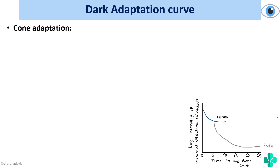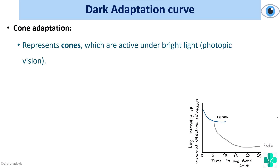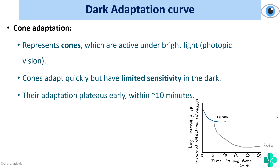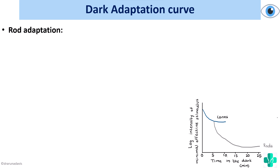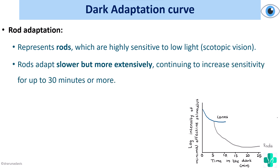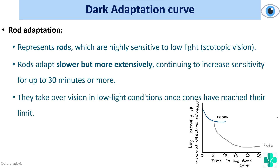In the dark adaptation curve, cone adaptation occurs first because cones were active under bright light. Once the lights are off, cones try to adapt quickly but have limited sensitivity in the dark, and their adaptation plateaus early — within about 10 minutes. Rod adaptation is slower but more extensive; rods are highly sensitive to low light and useful for scotopic vision. They continue increasing sensitivity beyond 30 minutes, taking over vision in low light once cones have reached their limit.